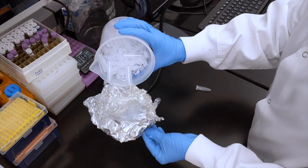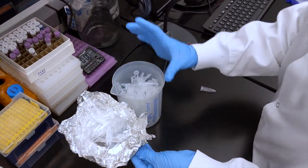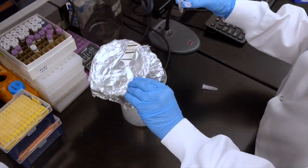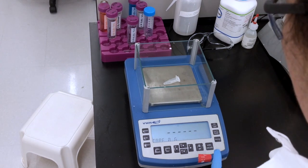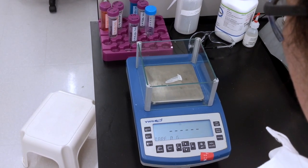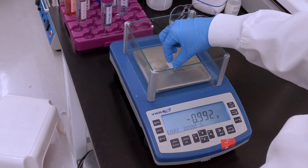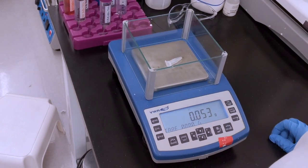Next, the gel fragment must be weighed to determine the amount of each buffer to add during the DNA isolation step. First, blank the scale with an empty microcentrifuge tube. Once the scale is blanked, weigh the microcentrifuge tube containing the gel slice.